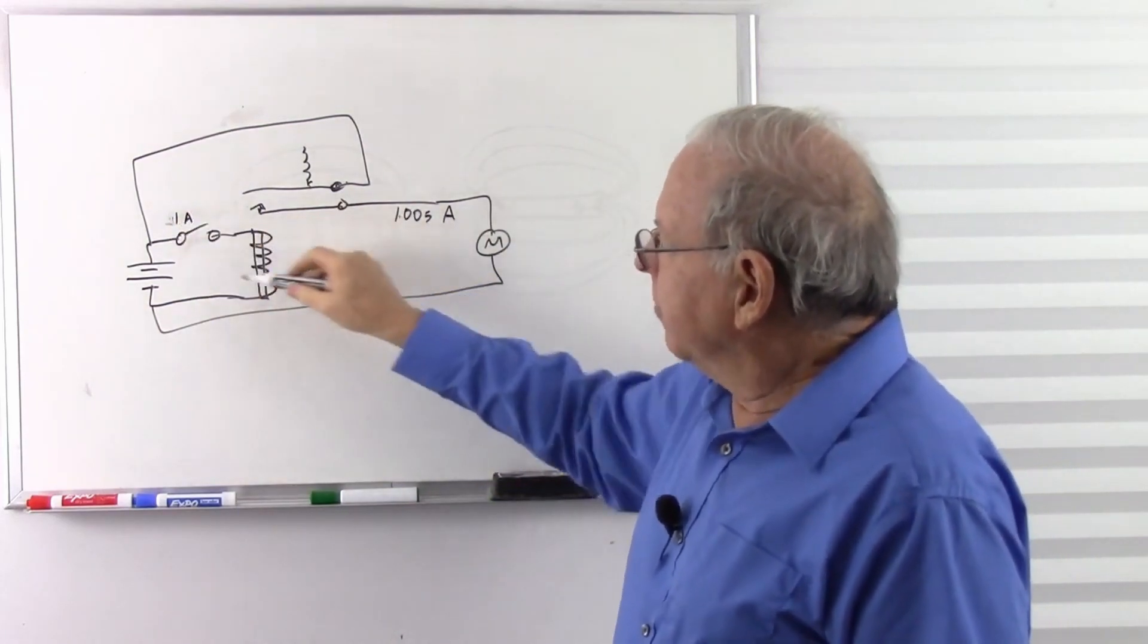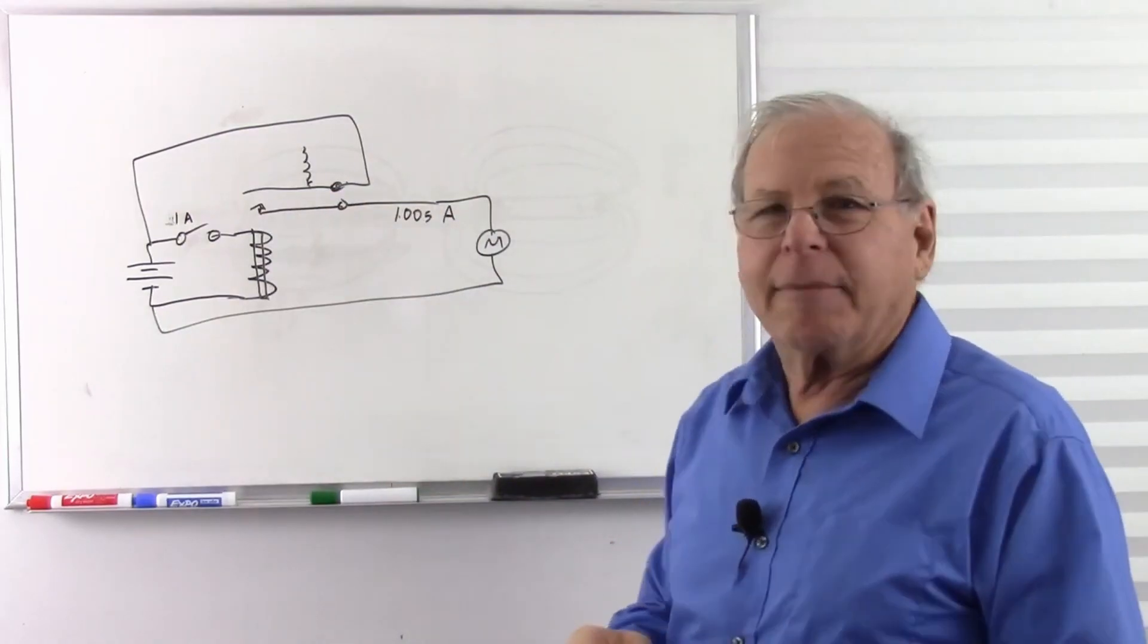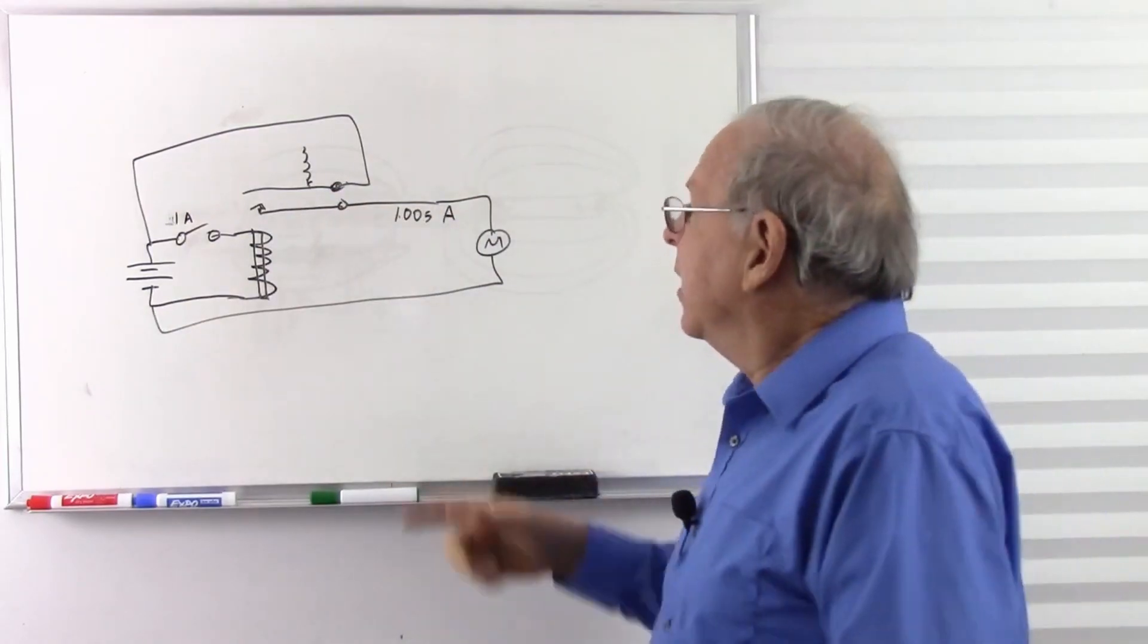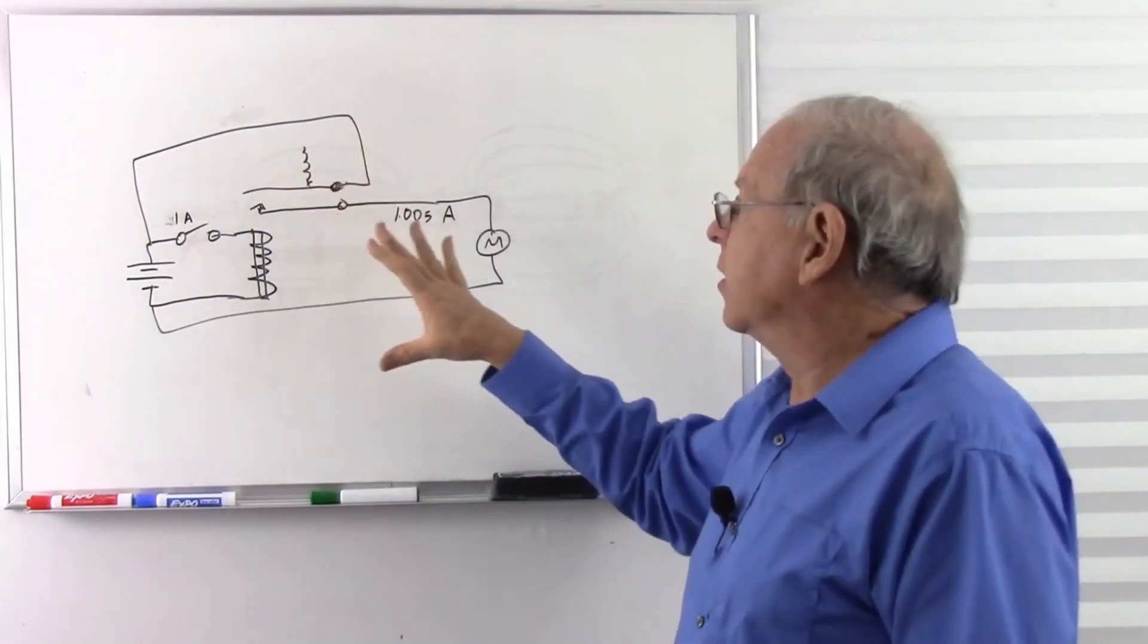So a little bit of current here causes a great big bit of current there. Sort of like a mechanical transistor in a way. So that's very common. Probably the most common use of a relay that you'll encounter.